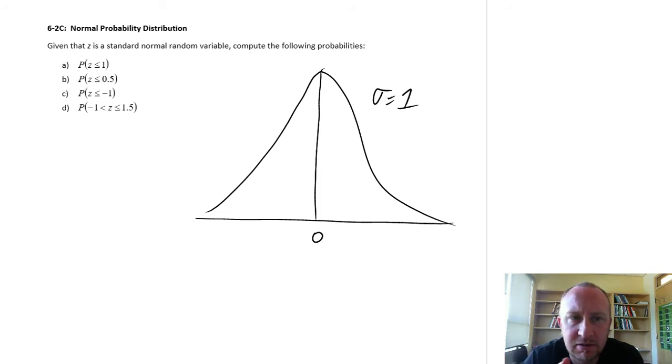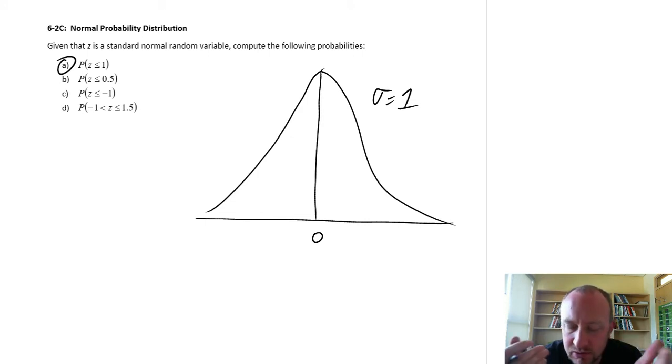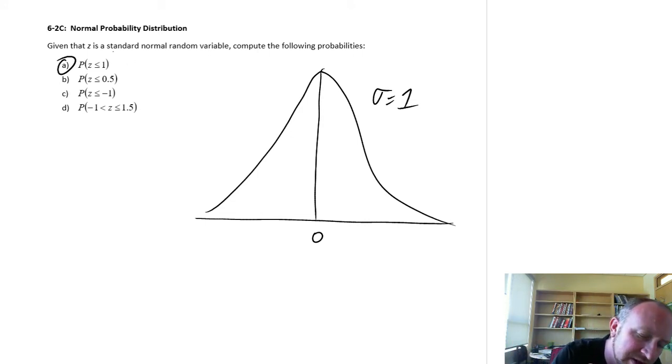So here's that distribution. What we want to do, what's the probability that z is less than or equal to 1, positive 1. Now the tables that we have usually give us values to a second decimal place. So this is really 1.00. So if this is 0 is my mean, 1 is going to be somewhere out here.